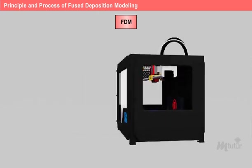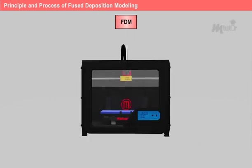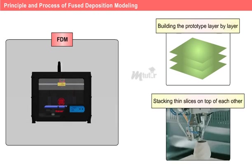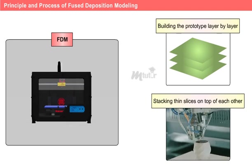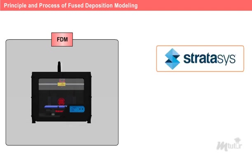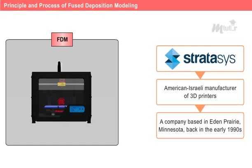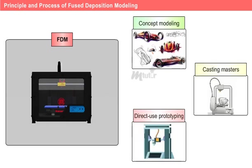FDM is a type of 3D printing, and it works by building the prototype layer by layer — like stacking thin slices on top of each other to create a complete object. FDM was developed by Stratasys Ltd, an American-Israeli manufacturer of 3D printers based in Eden Prairie, Minnesota, back in the early 1990s. Originally it was mainly used for concept modeling, but now it's widely used for various applications, including creating casting masters and direct-use prototyping.